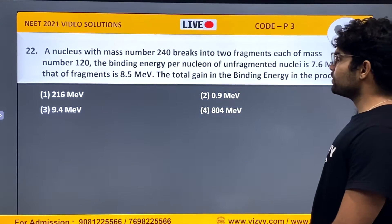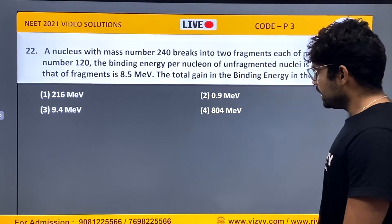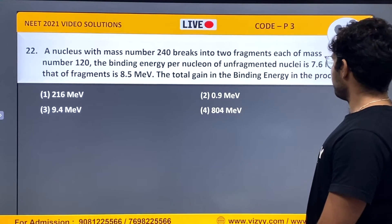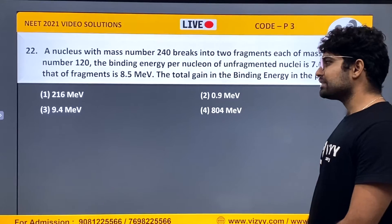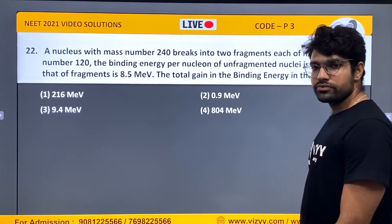A nucleus with mass number 240 breaks into fragments each of mass 120. The binding energy per nucleus of unfragmented is 7.6 while the fragment one is 8.5. So, total gain binding energy in the process.